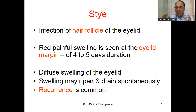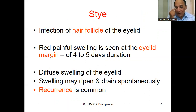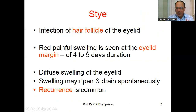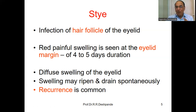What is a Stye? A Stye is an infection of the hair follicles of the eyelid. At the root of the hair there is a hair follicle, and infection there is called a Stye. Red painful swelling will be there on the eyelid margin for four to five days duration, with diffuse swelling of the eyelid. The swelling may ripen and drain spontaneously. However, in Stye there is a problem of recurrence — after every two months you may get the problem again — where Ayurvedic medicines can also help.